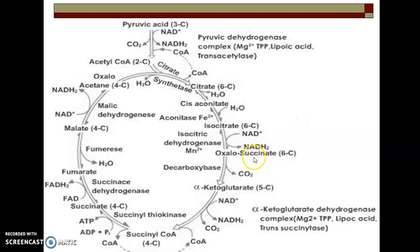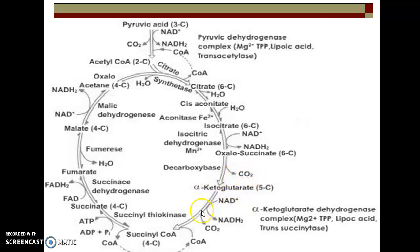Oxalosuccinic acid is converted into alpha-ketoglutaric acid, which is a 5-carbon compound, with the help of enzyme decarboxylase. One carbon is removed from oxalosuccinate to alpha-ketoglutarate in the form of CO2. Alpha-ketoglutarate is then converted into succinyl-CoA with the help of enzyme alpha-ketoglutarate dehydrogenase complex.